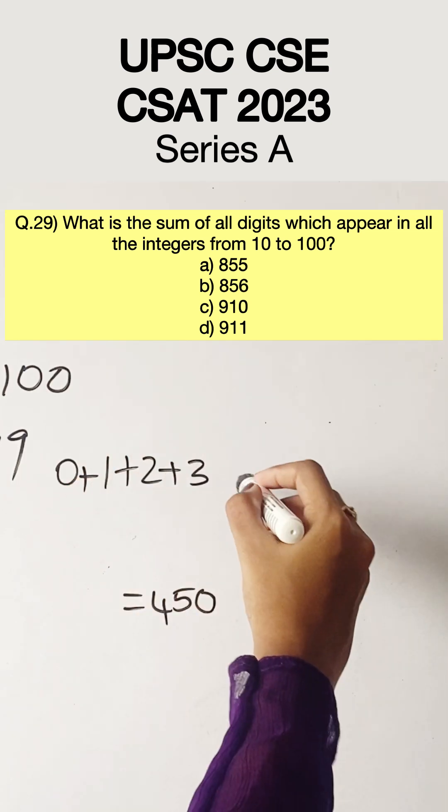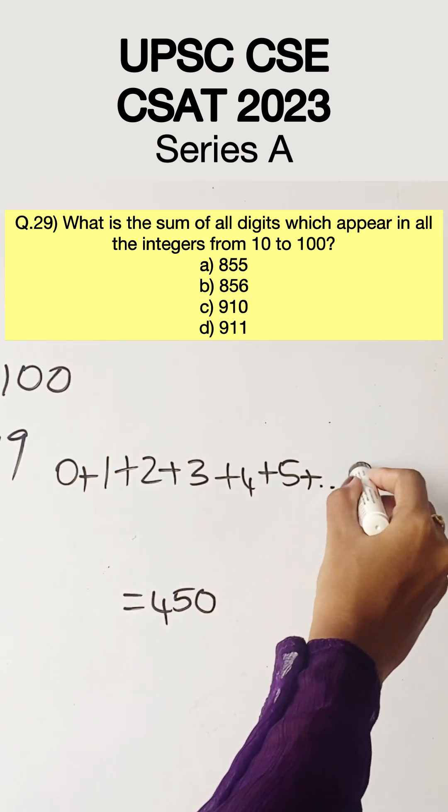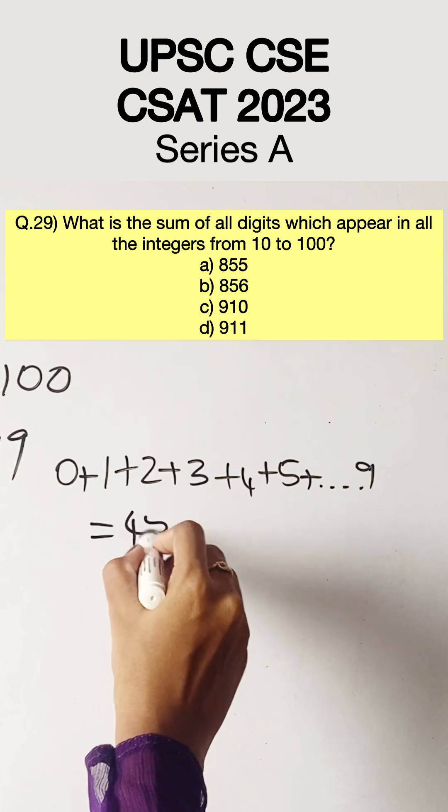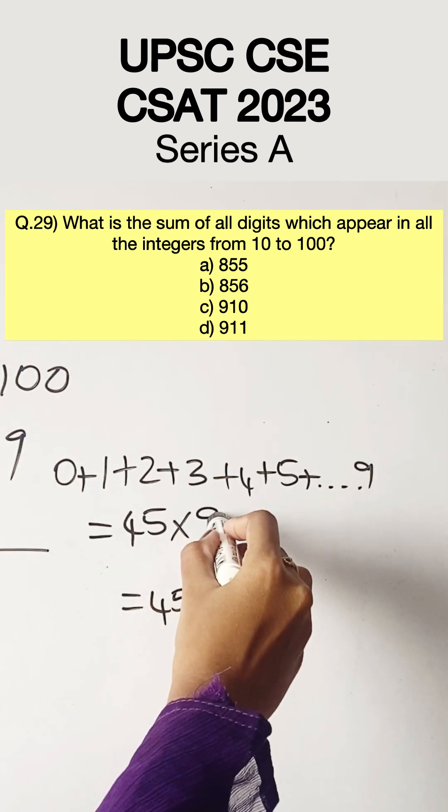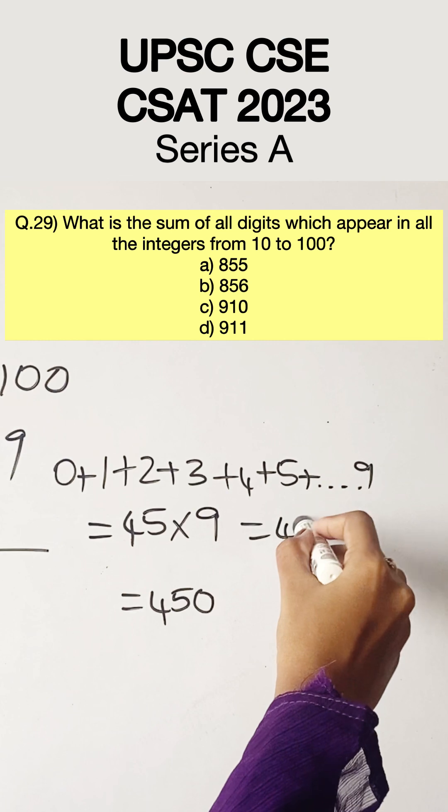We know that the sum of 1, 2, 3, 4, 5, 6, 7, 8, 9 is 45. Now we have to multiply 45 with 9. We get 405.